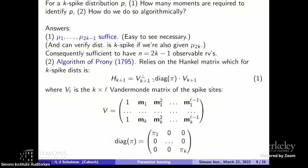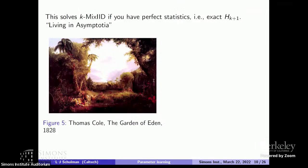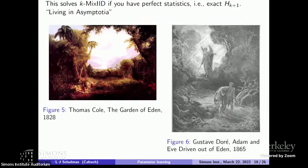There's this amazing 225-year-old algorithm, Prony, that tells you exactly how to work this out. This solves the k-mix-iid problem in principle: you collect your statistics, gather moments, invert them, and figure out what the parameters m_u and prior pi were. But we need to also control the dependence on sample size.